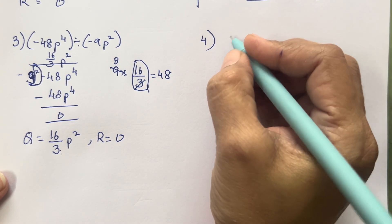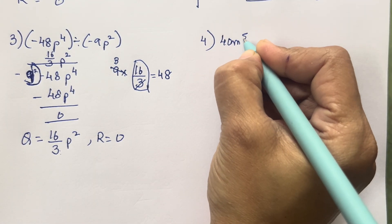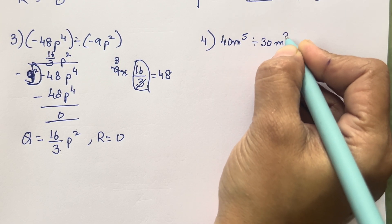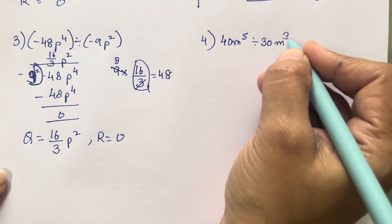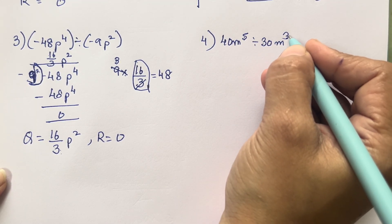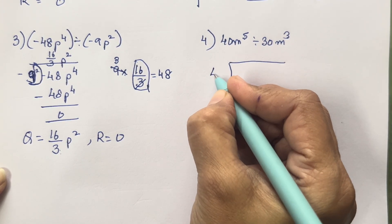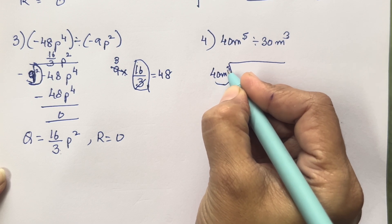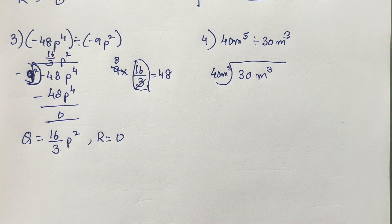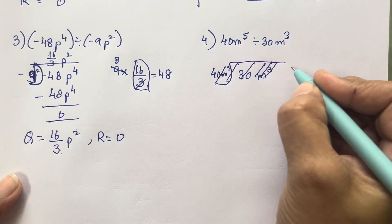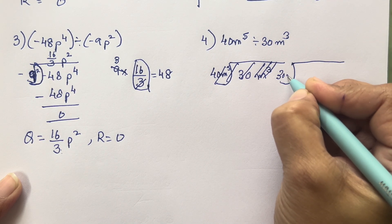Let's solve the fourth one: 40m⁵ divided by 30m³. Now 3 and 2 — remember this. 5 is over here, we will need 5, and 3 is there, that means 3 plus 2. We have to take 2 to the quotient. So first we will write the question. 30m³ — 40m⁵. Now 40 is not going to come in the 30 times table.